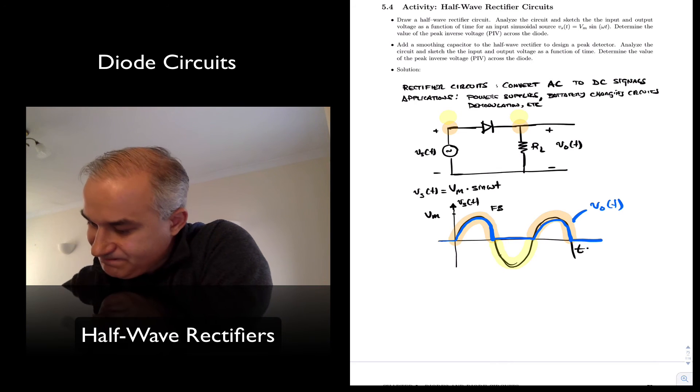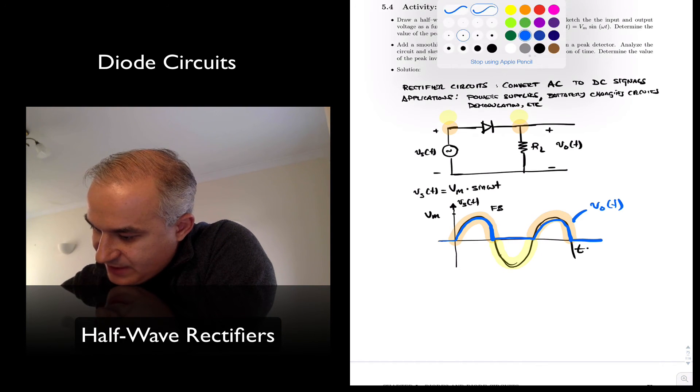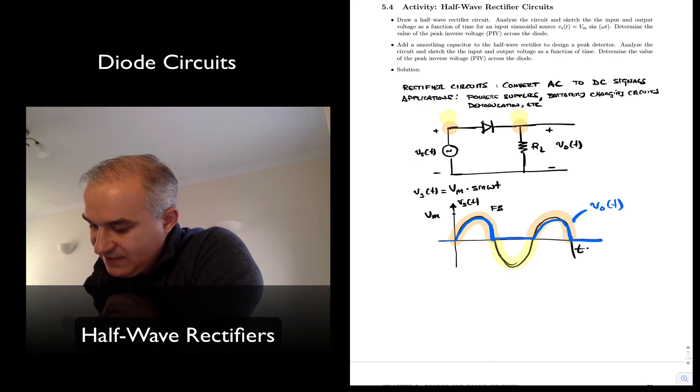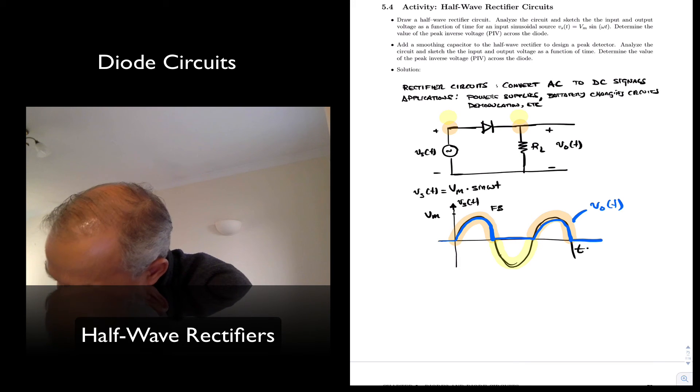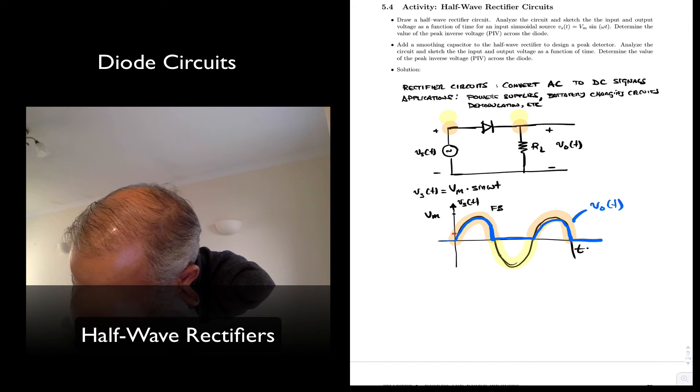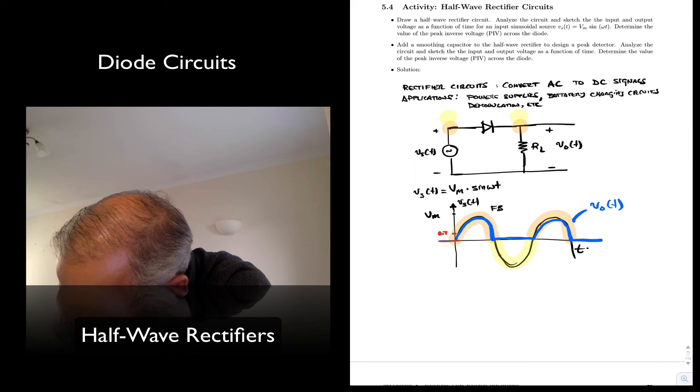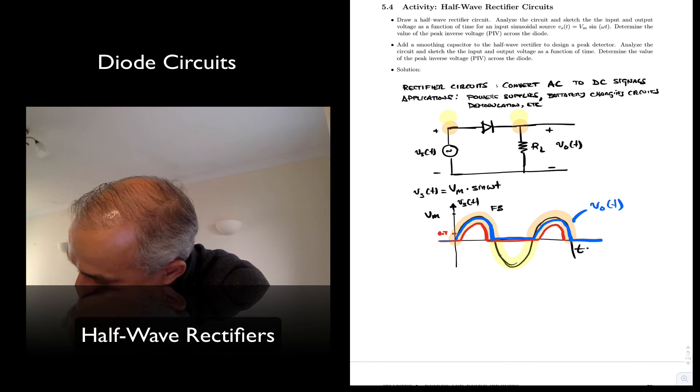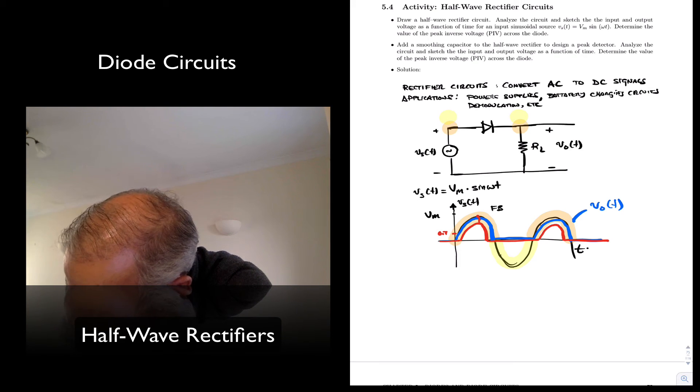Now we can use the second approximation. And in the second approximation of the diode, when we are conducting, we have a voltage drop of around 0.7 volts. And so we could think that until the voltage here is at least 0.7 volts, it doesn't conduct. So it takes a little bit of time, and then we start conducting. This is a rectification that we are doing, where the difference here is 0.7 volts.